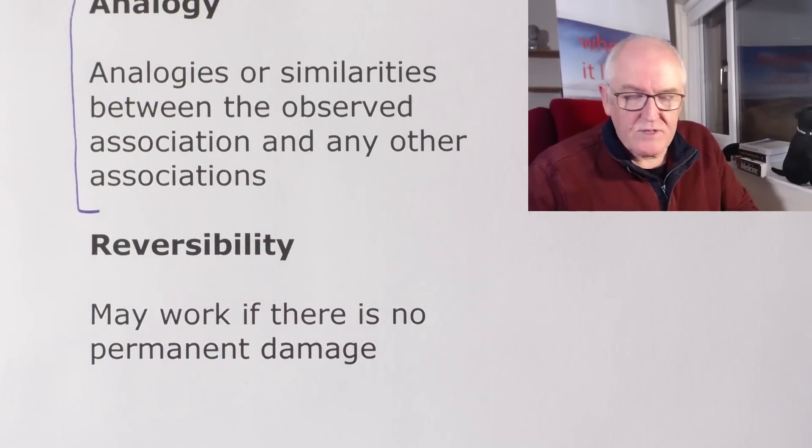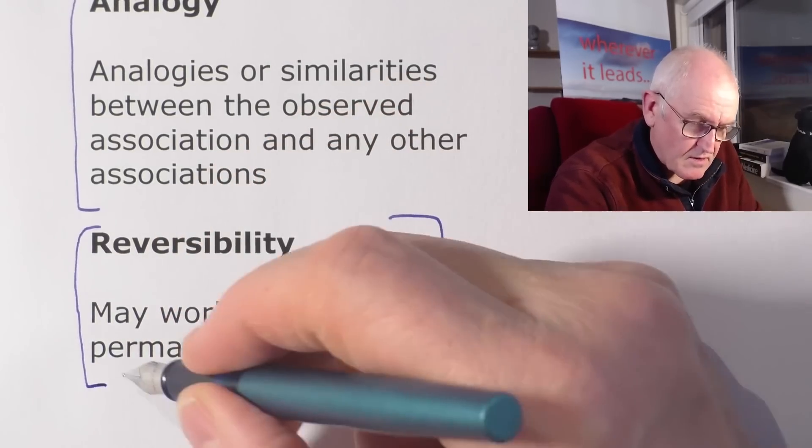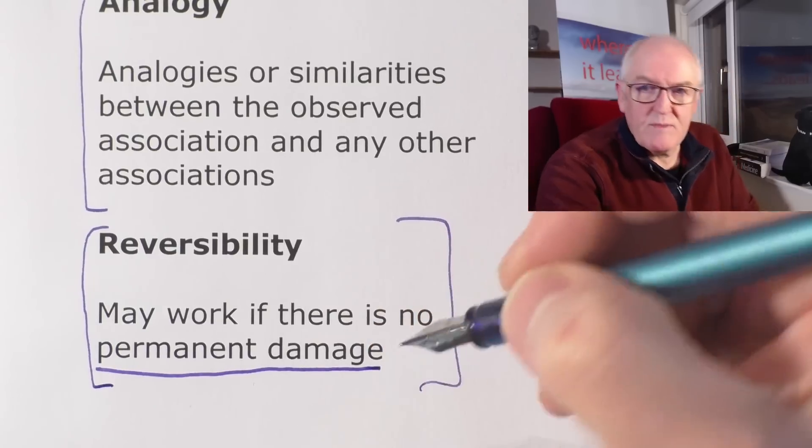Reversibility: if you take away the cause, the effect may go — but this does depend on whether any permanent damage has been caused. If there's permanent damage to tissues — for example, damage to the myocardium because part of its blood supply had been cut off — and you take away whatever caused that, that heart damage is not going to regenerate. Brain cells and heart cells don't regenerate. You get scar tissue formation, but not mitotic regeneration of the damaged tissue. Sometimes the effects can be reversible; other times, tragically, they are not.